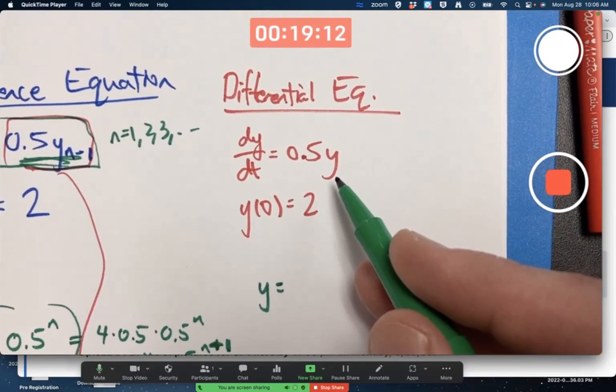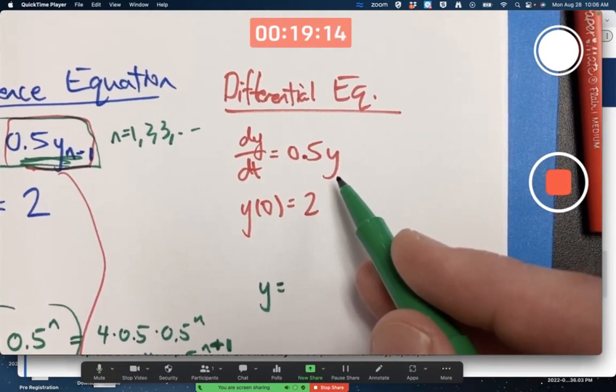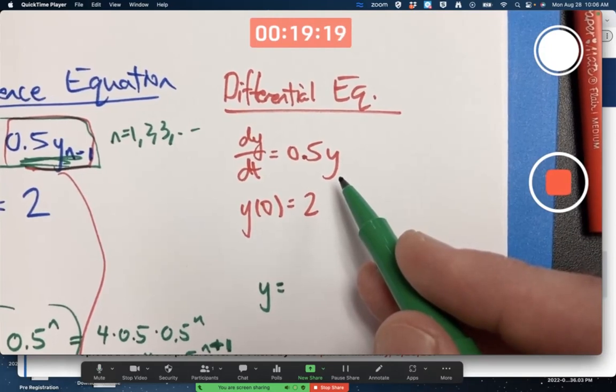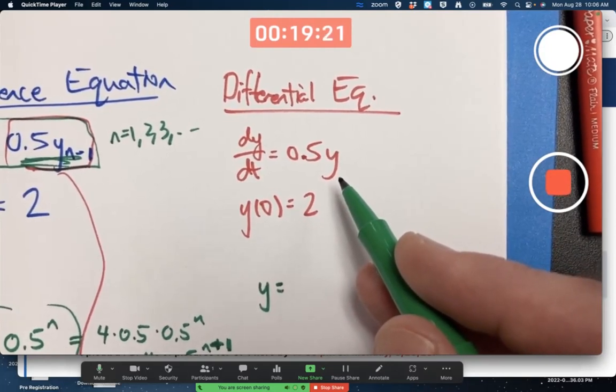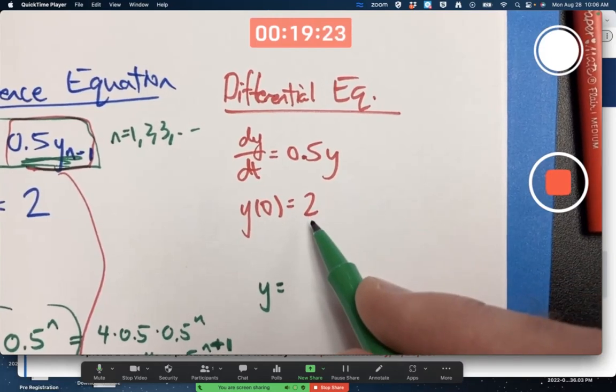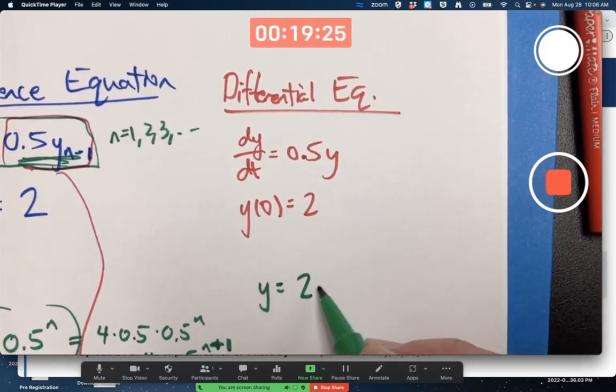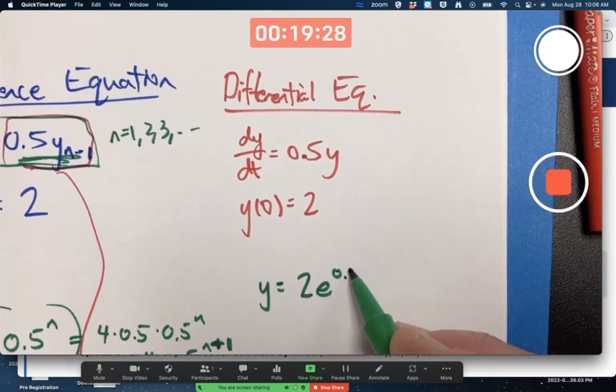What function of t is it? It turns out to be, so what function has the property that its derivative is always half of itself. I hope you guessed something involving e. E to the 0.5 t. In fact, any constant times e to the 0.5 t. But if we want this initial condition to be satisfied, we need a 2 in front. 2 e to the 0.5 t.